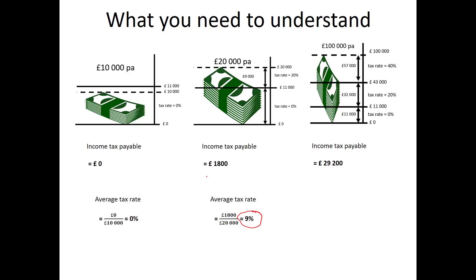For the person on £100,000 a year, even though their top rate of tax — their marginal tax rate — is 40%, because they pay 40% on every extra pound they earn in that band, their average tax rate is actually less than 30%. So we've now looked at marginal tax rates, average tax rates, and tax thresholds.